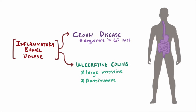Although ulcerative colitis is classified and treated as an autoimmune disease, Crohn disease isn't technically classified as an autoimmune disease, but rather an immune-related disorder. With autoimmune diseases, we think that your own cells and proteins trigger the immune system to start attacking itself.